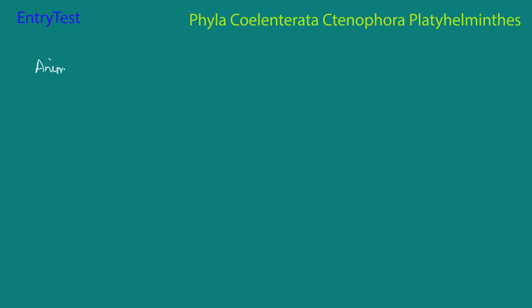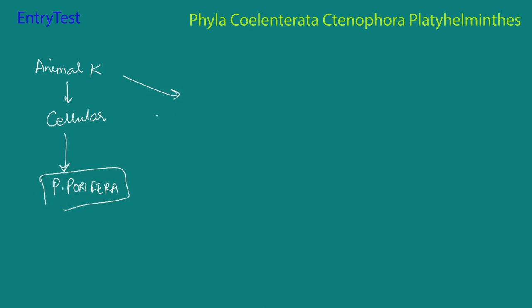So far we have covered the introduction to this classification. We know that the animal kingdom is divided on the basis of levels of organization into two major types. One is organisms that have a cellular level of organization, that is phylum Porifera, which we have covered so far. There are many others that have a tissue, organ, or organ system level of organization, and these are further divided into two depending on symmetry.